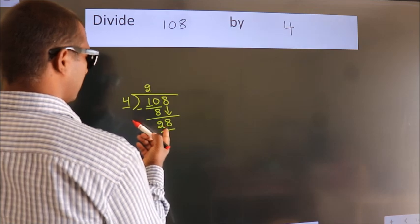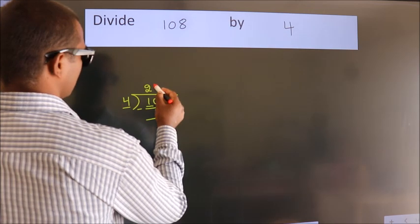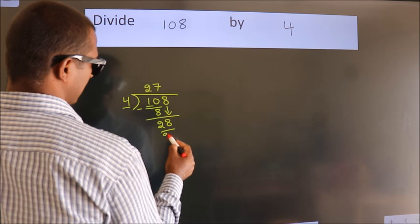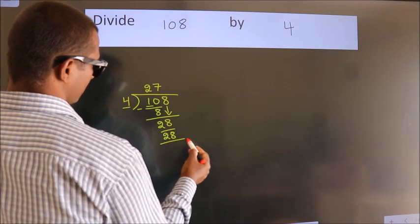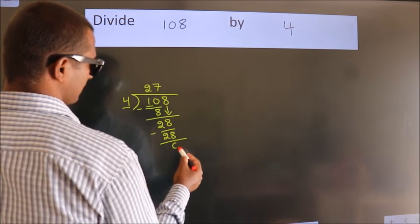When do we get 28? In 4 table. 4 sevens, 28. Now we subtract, we get 0.